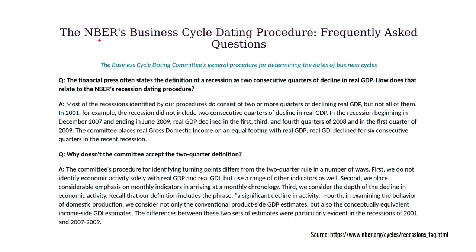In the US, the National Bureau of Economic Research has a slightly different definition, and they're the ones tasked with actually defining a US recession. They say they don't just use real GDP — they also use a range of other indicators, particularly indicators which arrive every month. That allows them to create a more timely definition of when activity starts to decline. And finally they also consider how large the decline is, because the phrase is 'a significant decline in activity.'